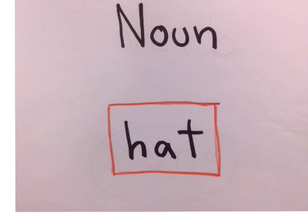First is a noun. A noun is a person, place, thing, sometimes an idea. In this case, it's a hat. When you see a noun, in order to attack it, you draw a square around it.